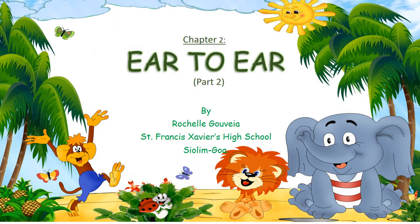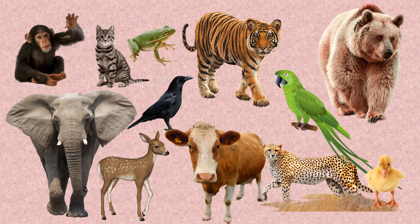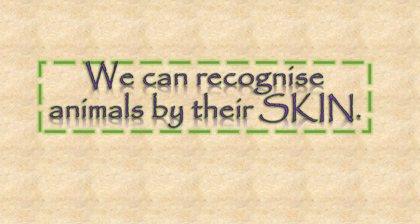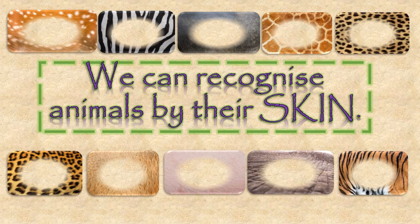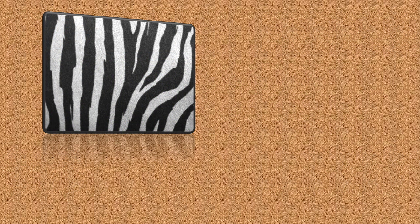Hello, my dear students and welcome back to part 2 of our lesson Year to Year. In the last video you have learnt to recognize animals by their ears. Did you know that we can also recognize animals by their skin? The color, texture and patterns of animal skin make them all so different and so unique. Let us try and guess the animal by observing its skin color and pattern.